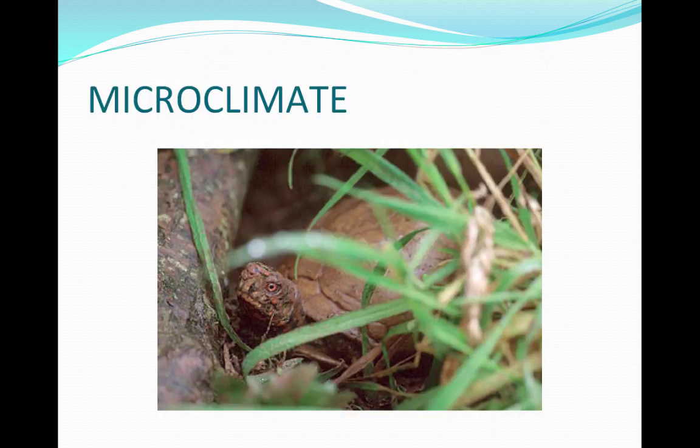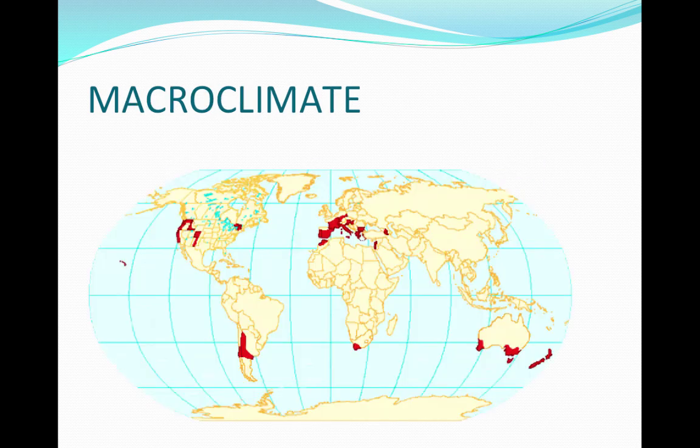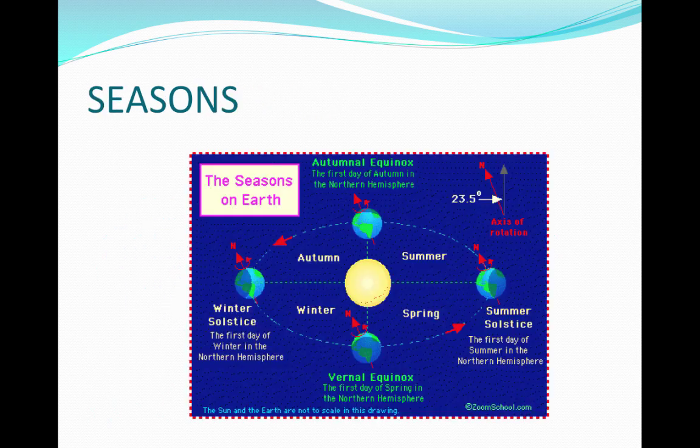Climate can be described as micro or macro. Microclimate is a local climate in a smaller area, while macroclimate is global or regional. Climate can be affected by seasons, water, mountains, and other factors.